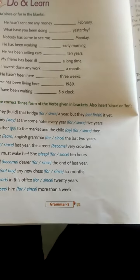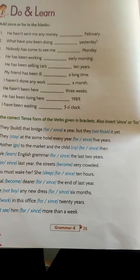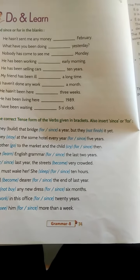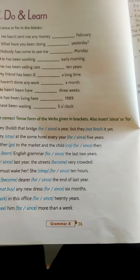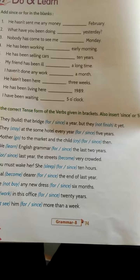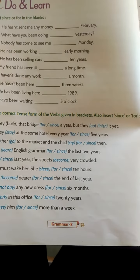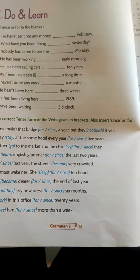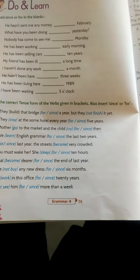Sixth: 'My friend has been ill for a long time.' Long time is a period, so we use 'for a long time.' Seventh exercise: 'I have not done my work.' Here it is a period of time — one month. So we use 'for a month.'